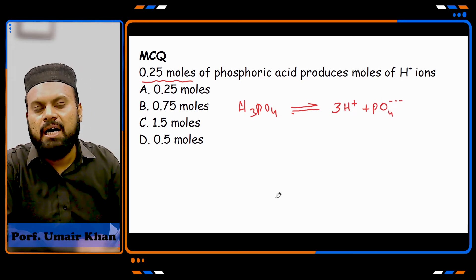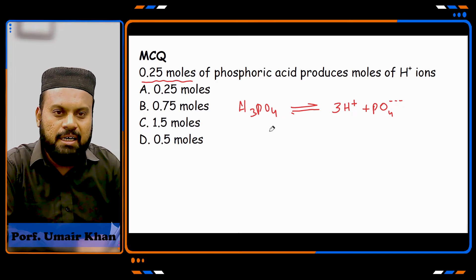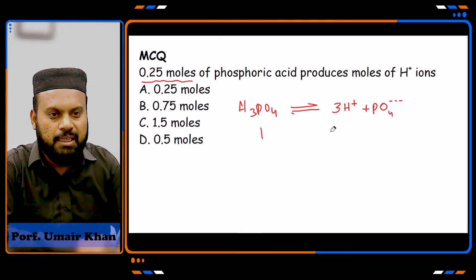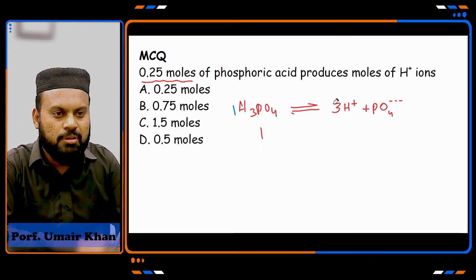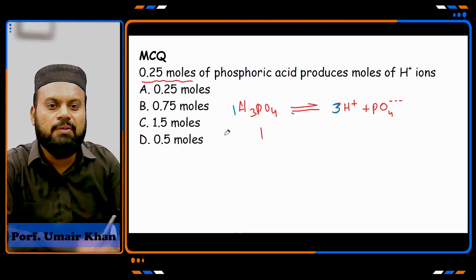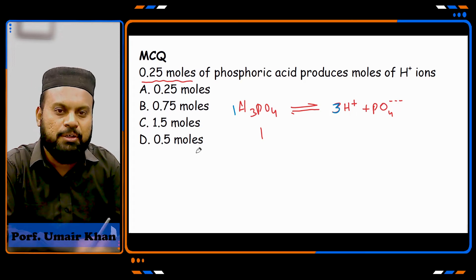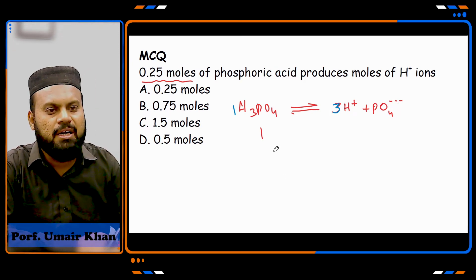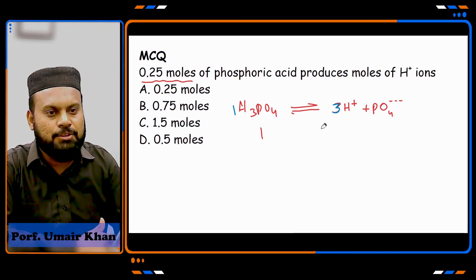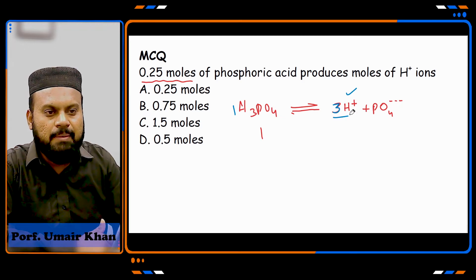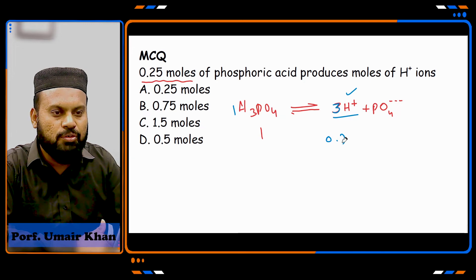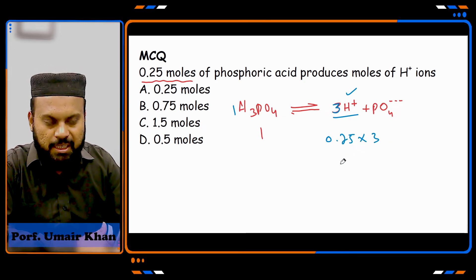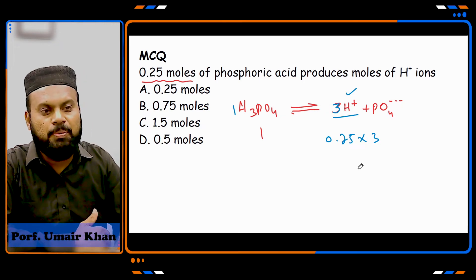Now the question is: if this is one mole, then this is one mole and this is three moles for hydrogen ion. But we have 0.25 moles, so what will happen? The hydrogen ion will be three times the moles. So if you have 0.25 moles, it will be 3 times for hydrogen ions.